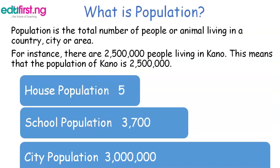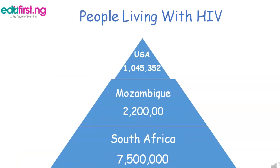What is population? Population is the total number of people or animals living in a country, city, or area. For instance, if there are two million five hundred thousand people living in Kano, this means that the population of Kano is two million five hundred thousand.